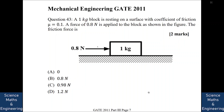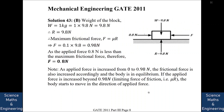A 1 kg block rests on a surface with coefficient of friction μ = 0.1. A force of 0.8 N is applied to the block. The weight of the block is 9.8 N, and with no other vertical forces, the normal reaction is also 9.8 N. The maximum (limiting) frictional force is f = μR = 0.1 × 9.8 = 0.98 N.